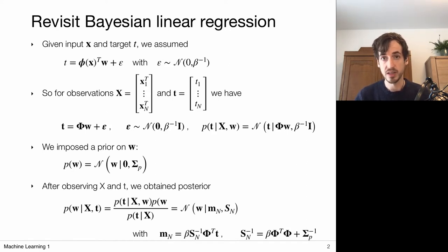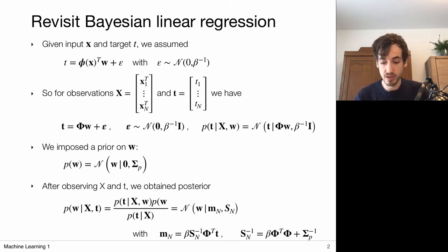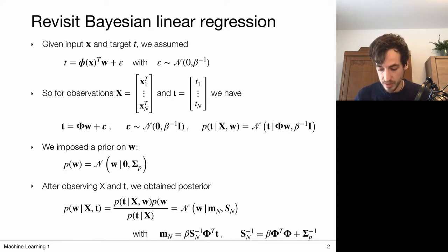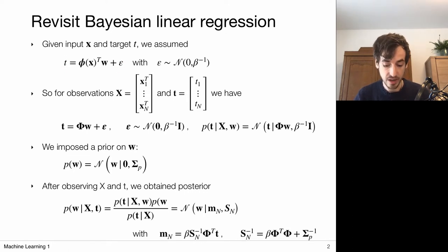We have all these observations that capture the relation from x to t, but we also assume that there is measurement noise — there are always errors in the data. We model these errors with Gaussian noise, so we are actually measuring the target but there's some noise in it: sometimes measuring a slightly too large target, sometimes a slightly too low target.